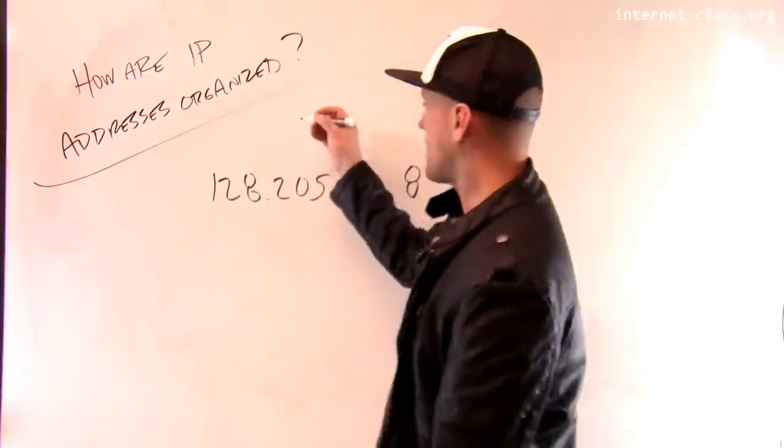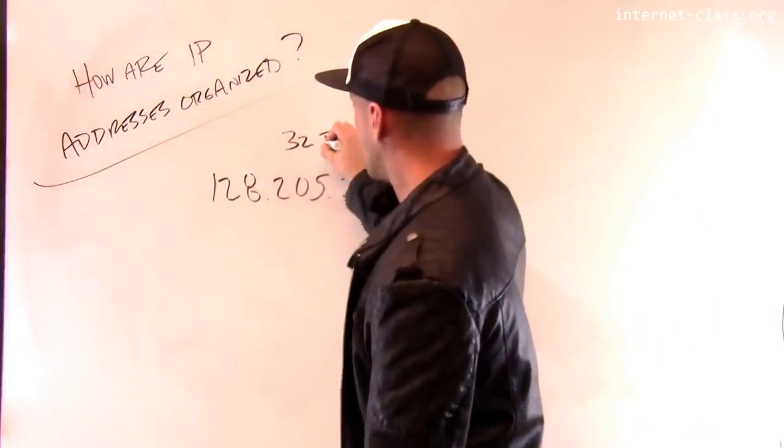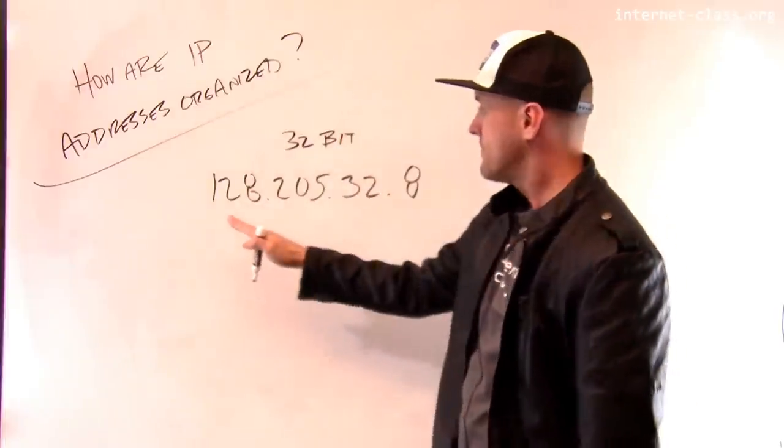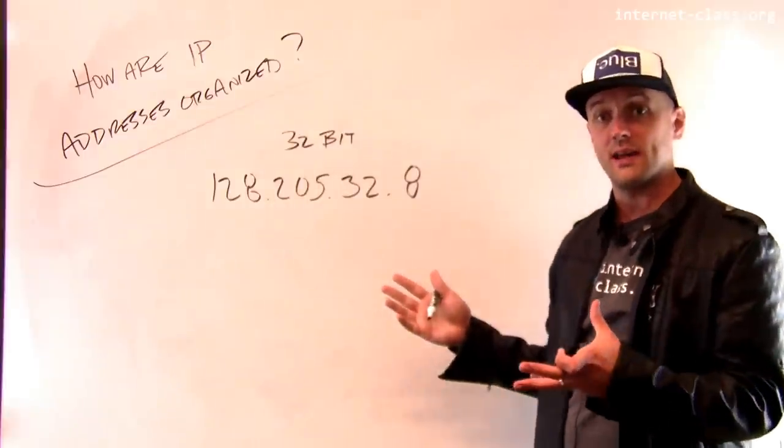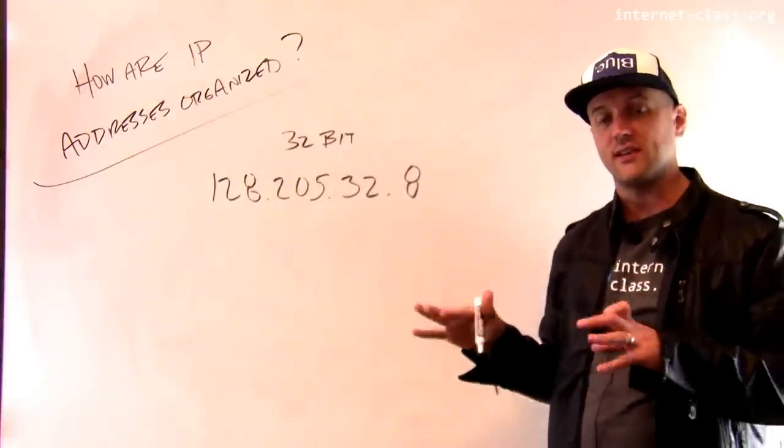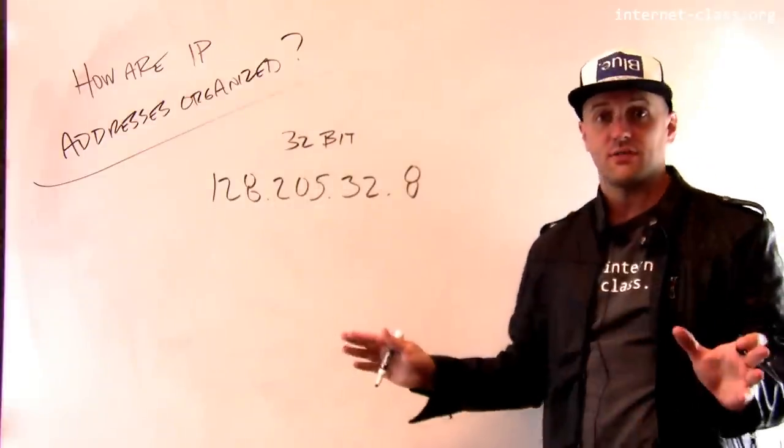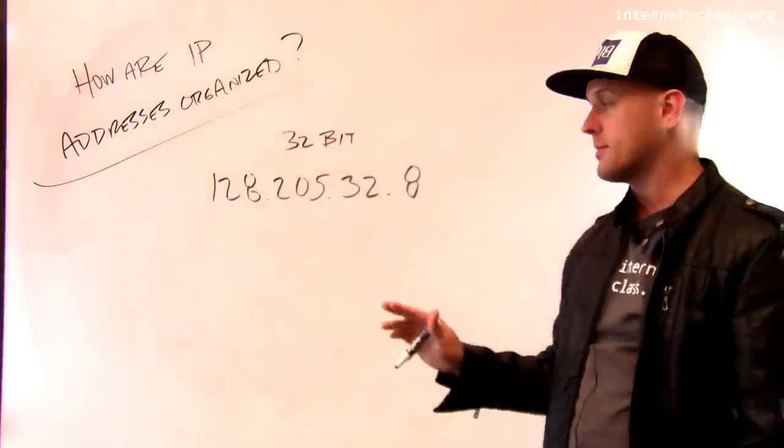This is actually a 32-bit field in the IP header. Each one of these numbers can range from 0 to 255. So they can take on 256 distinct values. Some of these addresses are special. They're only used for certain purposes.